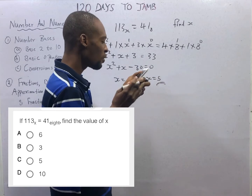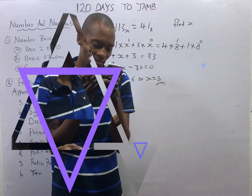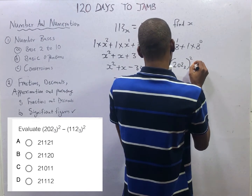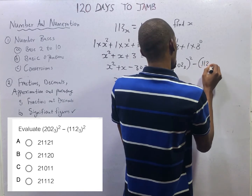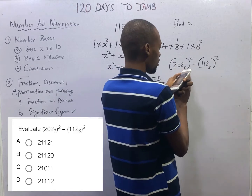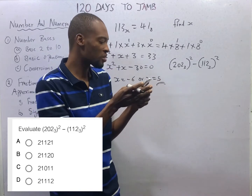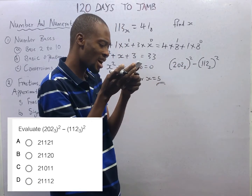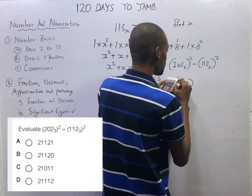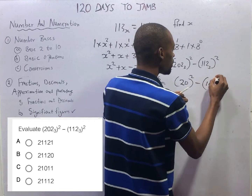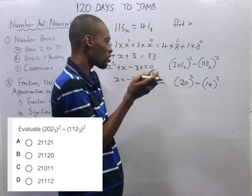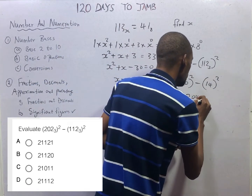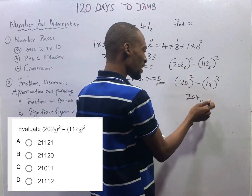Evaluate 202 base 3 squared minus 112 base 3 squared. Both are in base 3. To solve this, convert each to base 10. Converting 202 base 3 to base 10, I got 20. Converting 112 base 3 to base 10, I got 14. So 20 squared is 400 and 14 squared is 196. The result is 400 minus 196, which equals 204 in base 10.